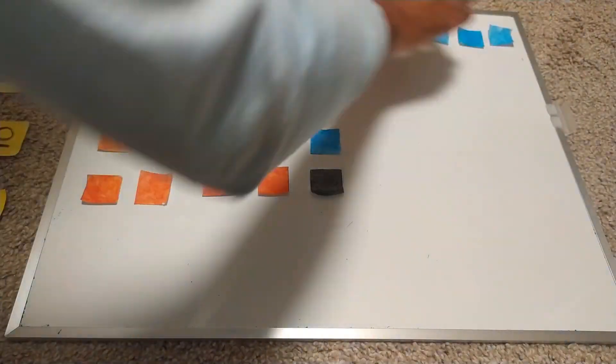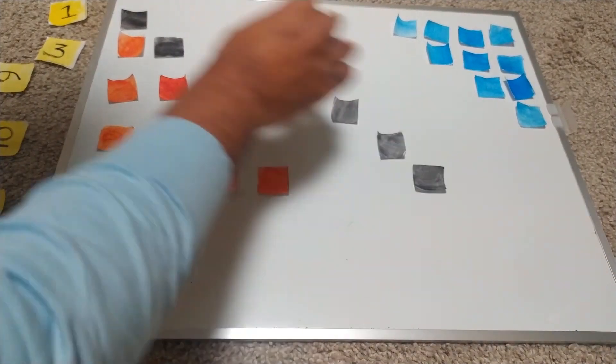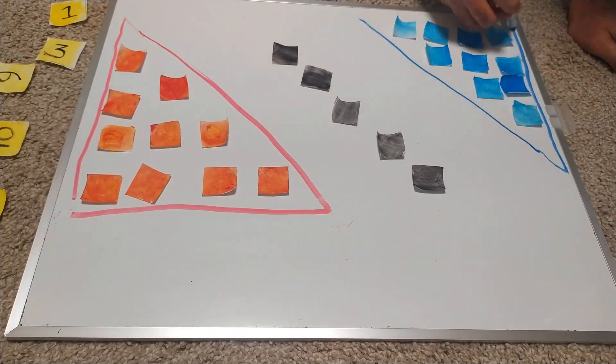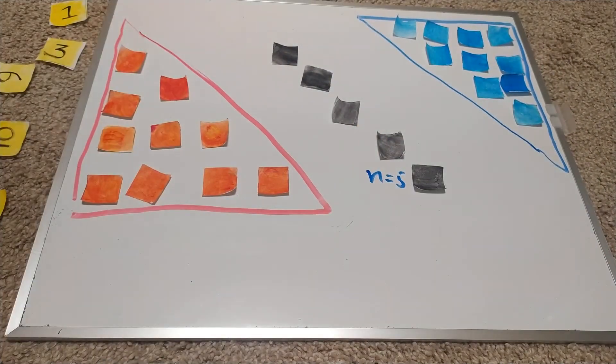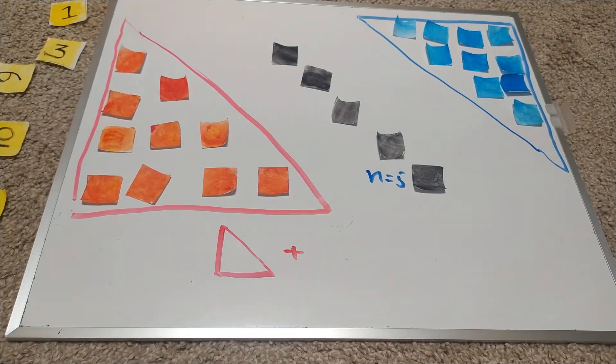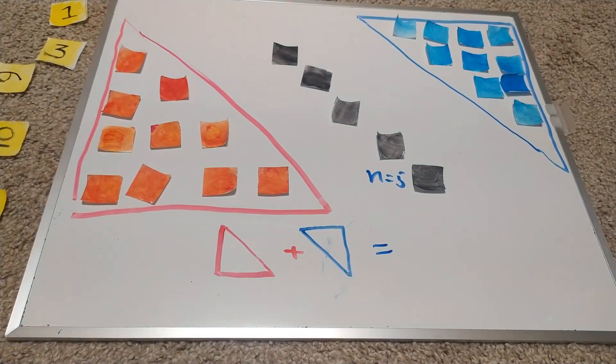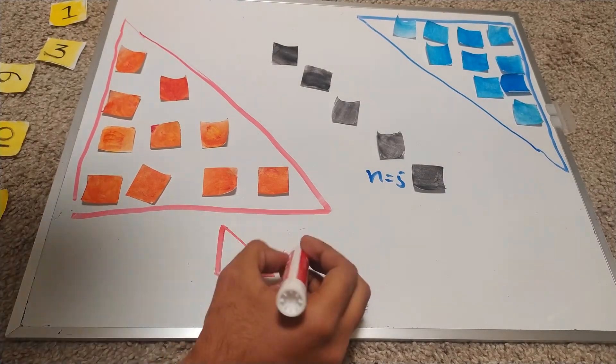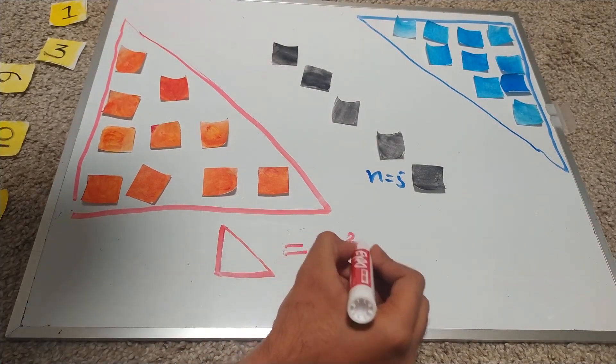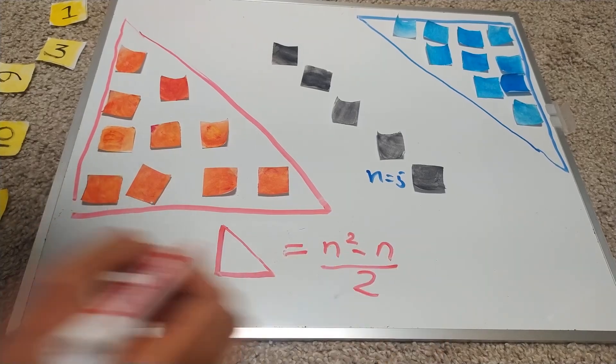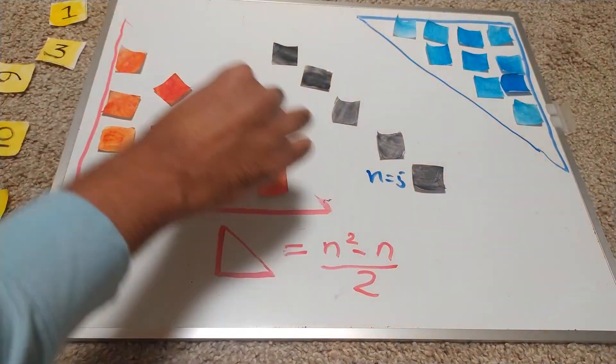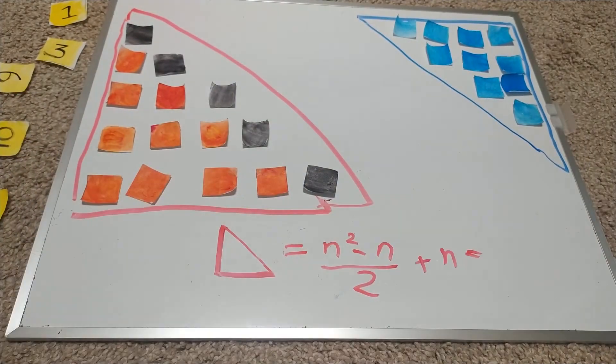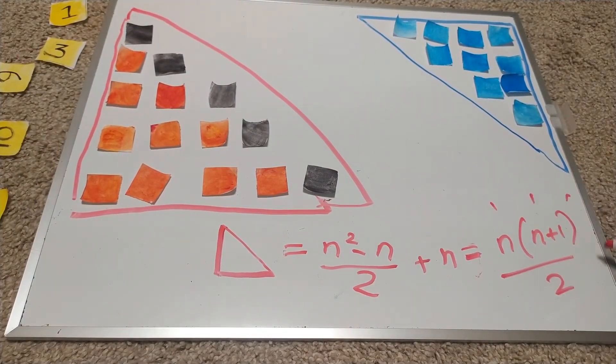What we can now do is divide the square into two congruent triangles plus a diagonal. The number of bits on the diagonal is n, so the number of bits in the two triangles add up to n squared minus n. As the triangles are the same, they have exactly n squared minus n over 2 pieces in them. So our original triangle had n squared minus n over 2 plus n, which is n times n plus 1 over 2 pieces.